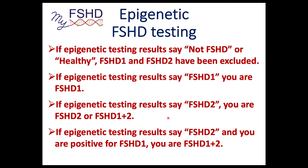The rub is when the result says FSHD2. Because of the nature of the testing — it tests for FSHD1 and FSHD2 at the same time — if it says FSHD2, you're either FSHD2 or FSHD1 plus 2. If you've had prior genetic testing confirming FSHD1 and our results say FSHD2, then you are very likely FSHD1 plus 2. So if FSHD1 is in your family and people say our testing might not be accurate or gave the wrong result — actually it's more accurate.